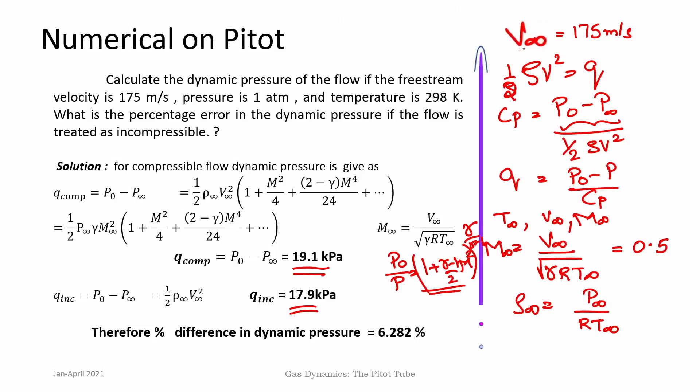Once the flow becomes compressible, one has to use compressible flow equations and the stagnation process to calculate velocity or Mach number from the measured stagnation and static pressures, and not the incompressible Bernoulli equation. In the next class, we will look at the star condition — stagnation conditions and sonic (star) conditions are important critical conditions for gaseous flow.